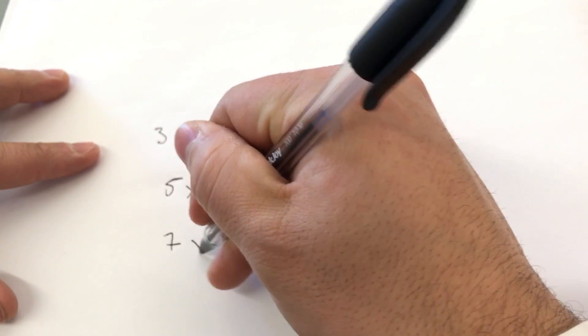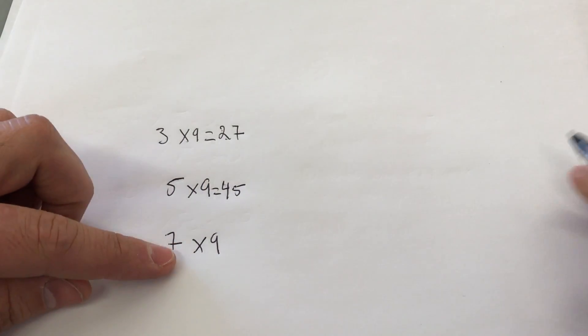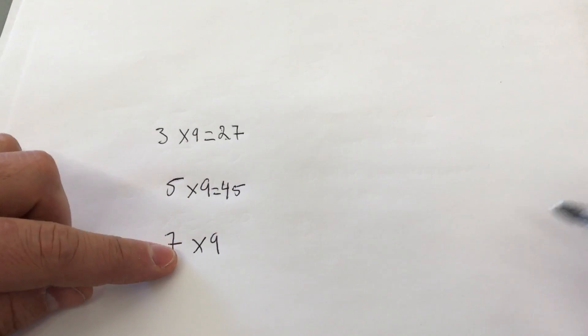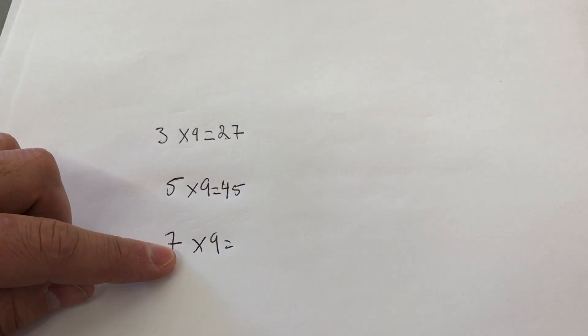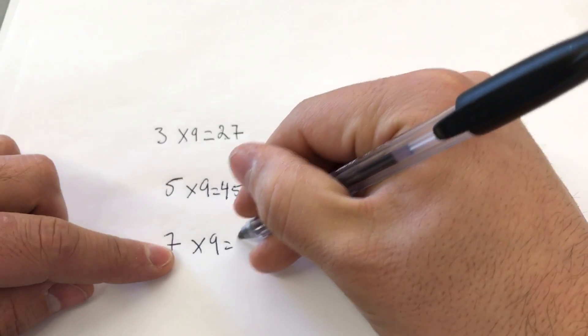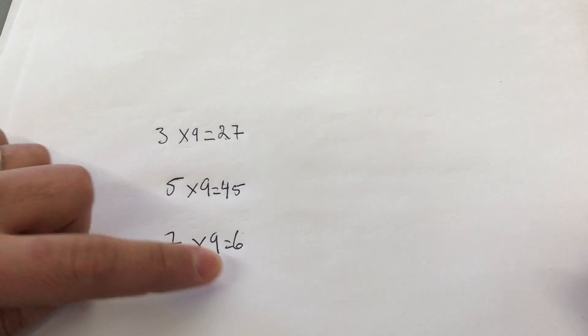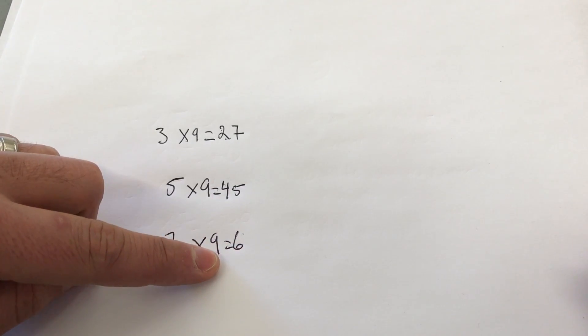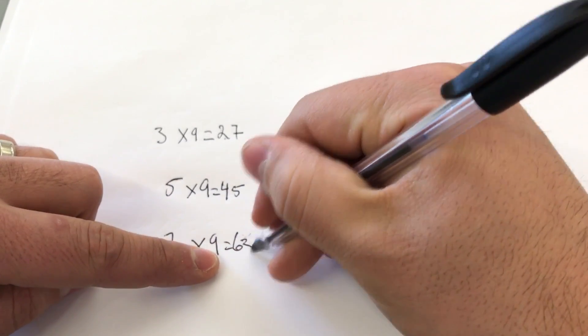Let's keep going. 7 times 9. Once again, we take the 7 and subtract 1 from the non-9 number, which gives us 6. Then we take this 6 and subtract it from 9, which gives us 3. There you go.